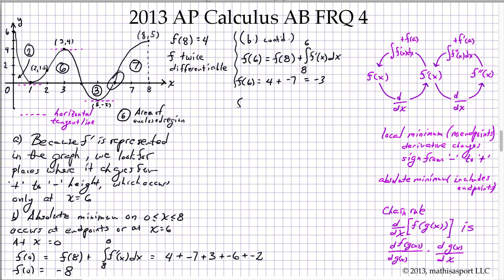And f(8) is given as 4. So we're being asked to select the absolute minimum from these three candidates, and that's clearly f(0) equals negative 8.